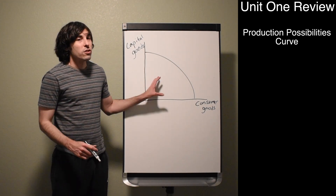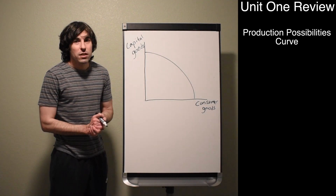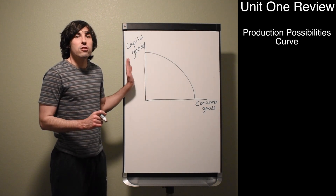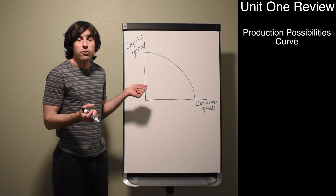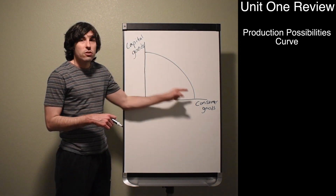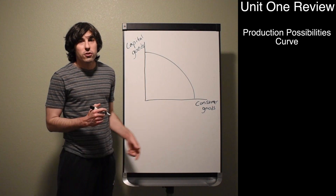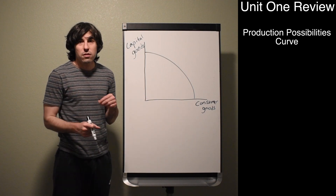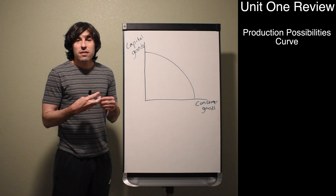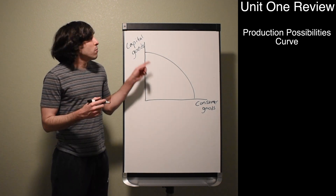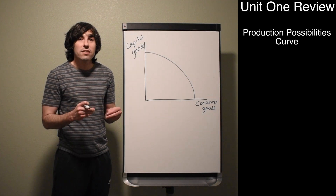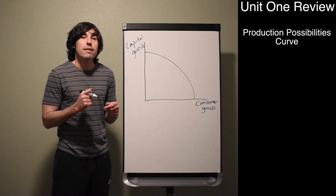First, let's talk about the production possibility curve. The production possibility curve is basically a graph that shows trade-offs between two alternative goods. The main goods we're usually going to have are capital goods and consumer goods. Consumer goods are things that consumers buy — cars, coffee, food, stuff like that — whereas capital goods are machines and things that businesses buy.